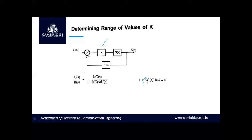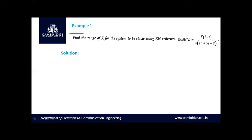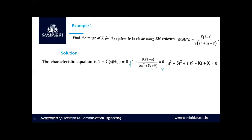Let us solve problems related to relative stability analysis and determining the range of k. Example: find the range of k for stability using RH criterion, given G(s)H(s) = k(1 - s) / [s(s² + 5s + 9)]. The variable gain k is unknown. The characteristic equation is 1 + G(s)H(s) = 0.